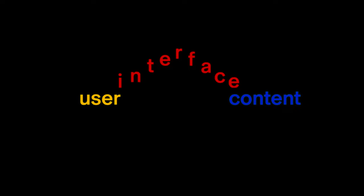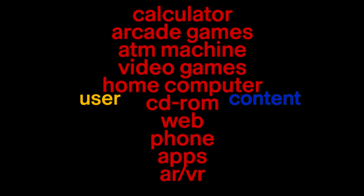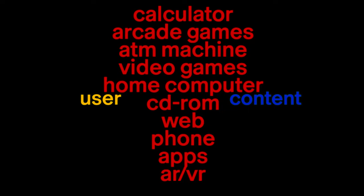In previous segments, we've looked at the relationship between the user and content and seen how the interface can act as a bridge. Now we're going to look at screen-based historical models. Starting in the 1970s with the advent of the calculator, we can see from this list how various different screen-based activities have permeated our society and become more and more ever-present in our lives. These screens have become multifunctional as they've advanced — the pocket calculator had very limited functionality, video games existed in one physical space, and ATM machines had a very specific function to get cash at a physical site of the bank. As we advance through the web, CD-ROMs, phones, apps, AR, and even VR, we're looking at how these screens can do many more things.